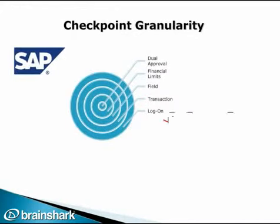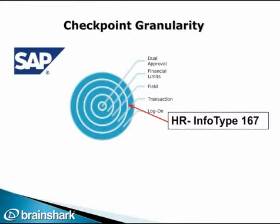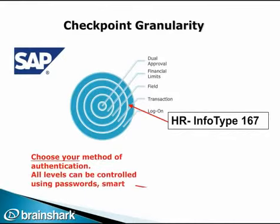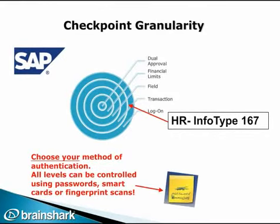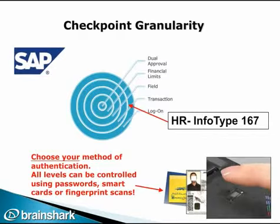Here's a graphical view of what we mean by more granular controls in the SAP system. In this diagram, we have called out InfoType 167, which is a critical field that stores employee data. For the ultimate in security and full HIPAA compliance, you would need to set up checkpoints by employee at that level of detail and secure them with either smart card or fingerprint scan access. Each checkpoint would then automatically generate a robust audit trail.